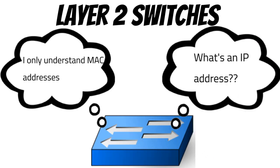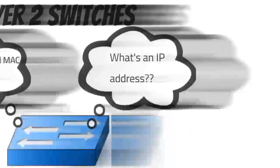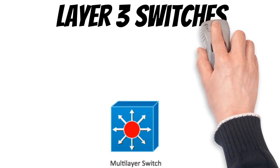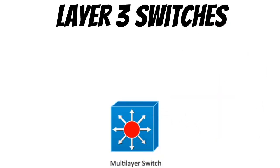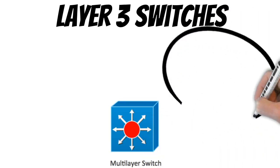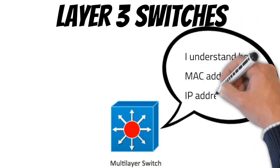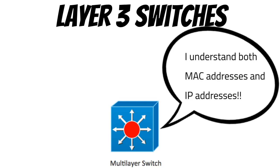As for layer 3 switches, they operate at the layer above layer 2, known as the network layer. This layer doesn't only use MAC addresses — it also uses IP addresses for those packets.